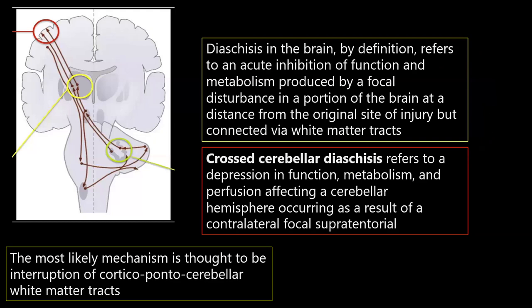Crossed cerebellar diaschisis is a phenomenon where there is acute inhibition of function and metabolism produced by a focal disturbance in a portion of the brain at a distance from the original site of injury, but connected via white matter tracts. Here, in this case, it is the corticopontocerebellar white matter tracts which are involved.